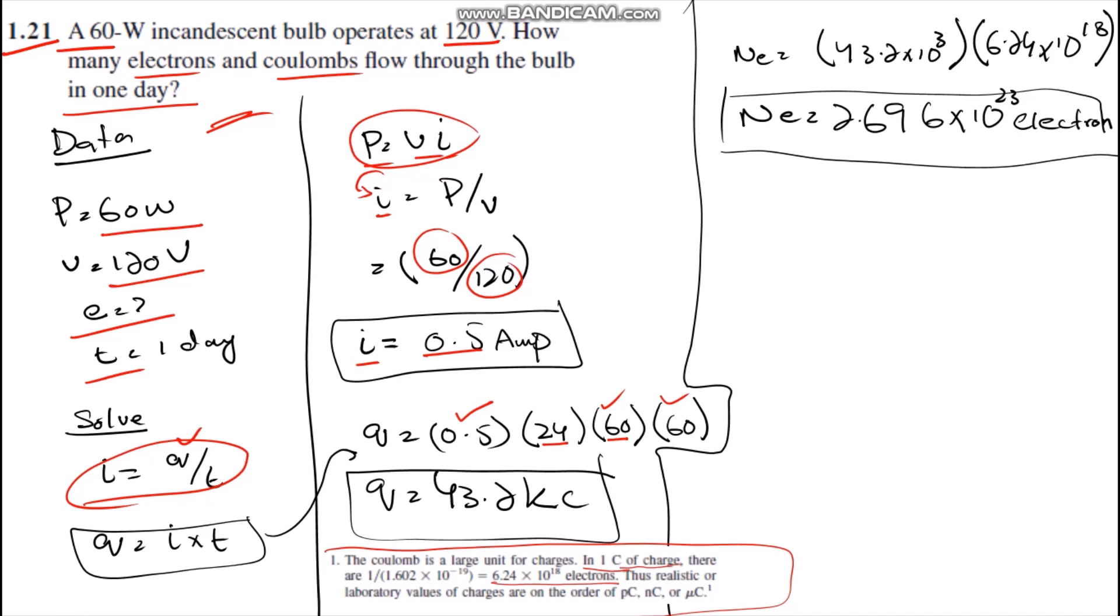Then we simply multiply 43.2 multiplied by 10^3 with 6.24 multiplied by 10^18. Then we get the number of electrons: 2.696 multiplied by 10^23 electrons. Thanks for watching.